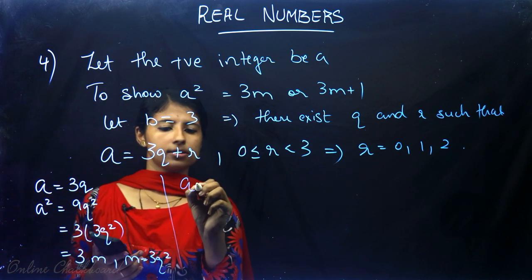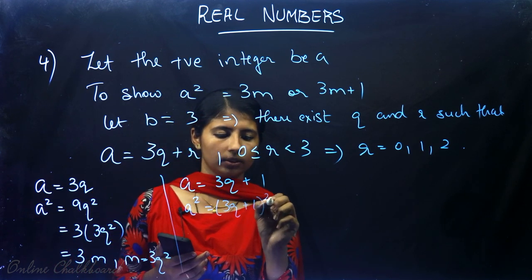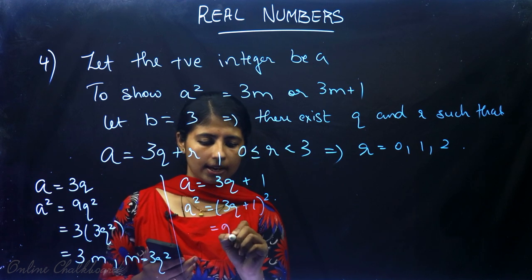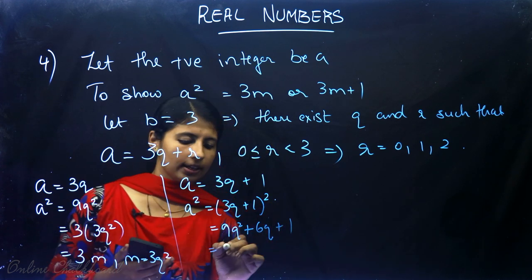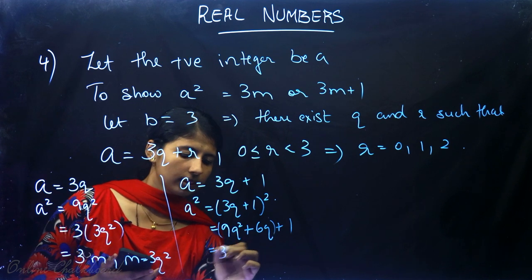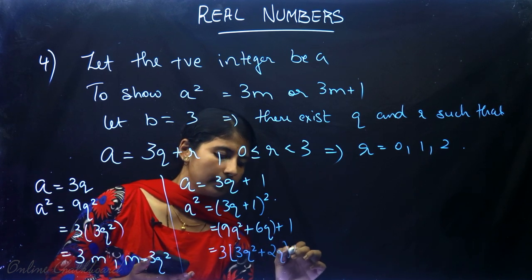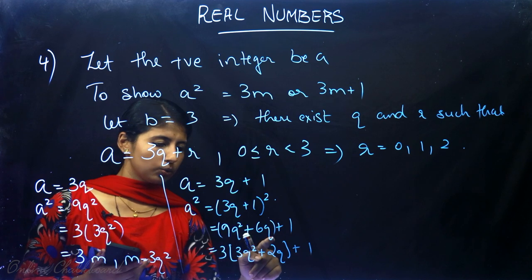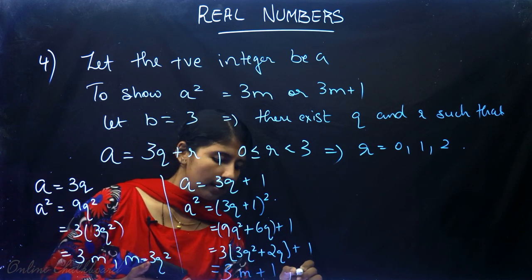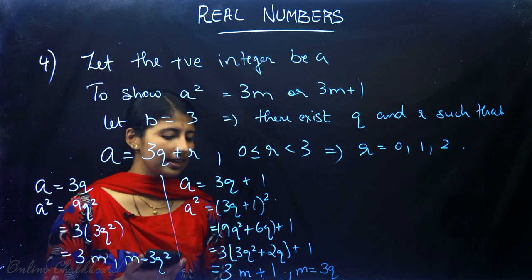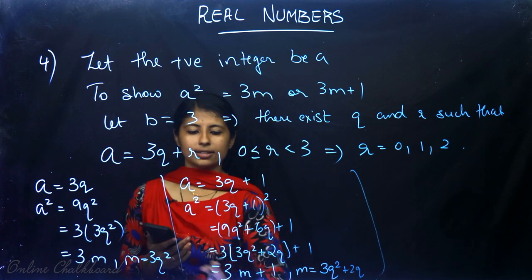Now suppose a = 3q + 1. Taking the square and applying (A+B)² = A² + 2AB + B²: a² = 9q² + 6q + 1. Taking 3 common from the first two terms: a² = 3(3q² + 2q) + 1 = 3m + 1, where m = 3q² + 2q is an integer. Here also we got a² is of the form 3m + 1.